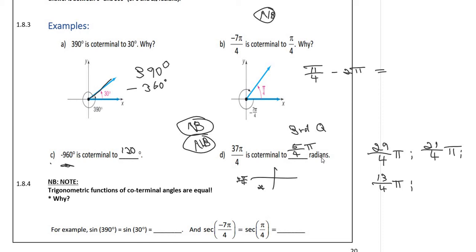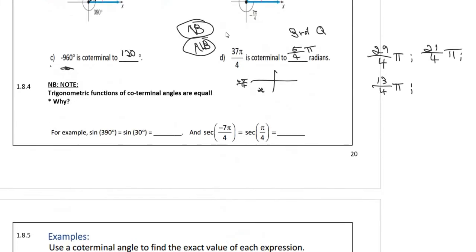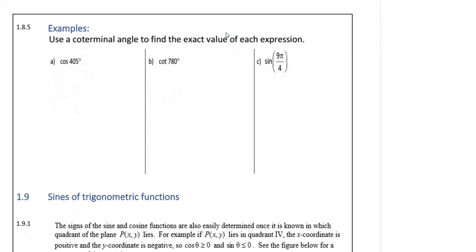So when we want to find a co-terminal angle, although all of those others are fine, they are all co-terminal angles, we will like to come back to the first one we find inside 0 to 360 degrees or 0 to 2π.